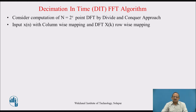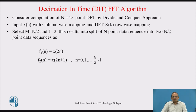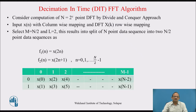Let us use column-wise mapping for input and row-wise mapping for the output X(k), that is the DFT. By choosing M equal to N/2 and L equal to 2, it splits our input signal x(n) into two data sequences of N/2 points. The first sequence is F1(n) which equals x(2n), and the second signal is F2(n) which is x(2n+1), with n equal to 0 to N/2 minus 1. It is decimated into two sequences: one with all even-valued samples of x(n) and the second with odd-valued samples of x(n).